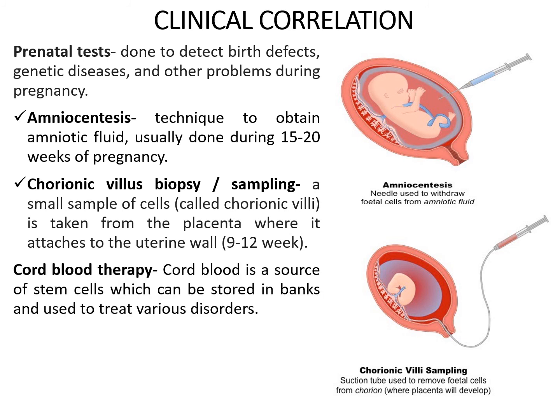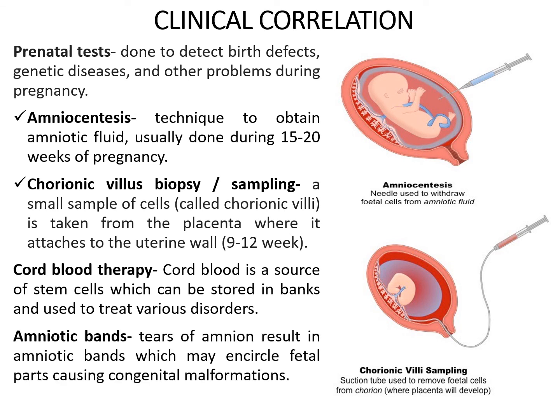Cord blood is a source of stem cells which can be stored in banks and used to treat various disorders. Amniotic bands are tears of amnion which may result in bands that encircle fetal parts, leading to congenital malformations.